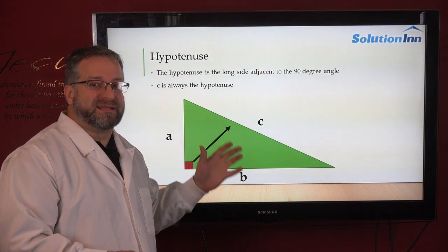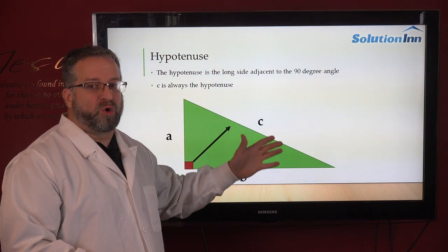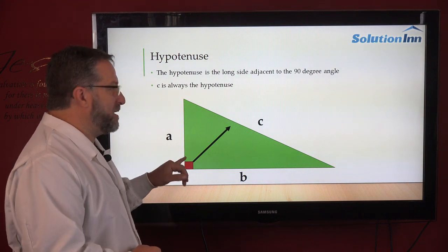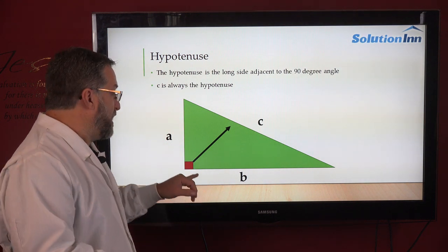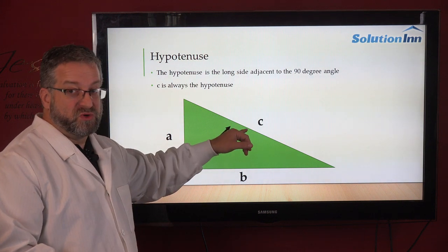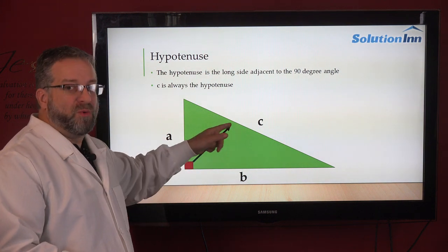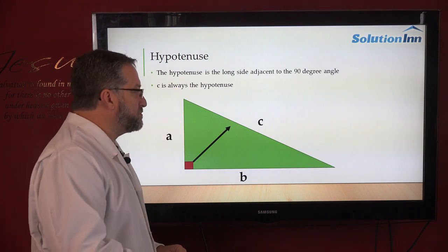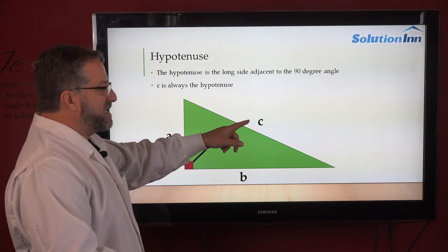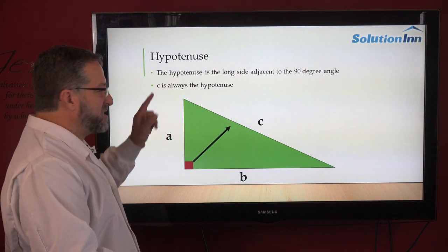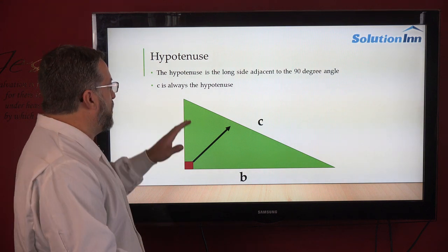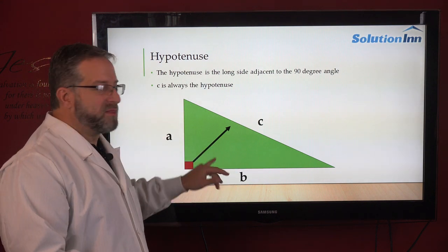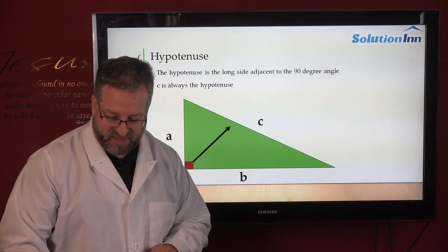In the special case of the Pythagorean Theorem, it's the side opposite the 90 degrees which always ends up being longer than the other two sides. This is c — the c in the equation. The hypotenuse is always c in the Pythagorean Theorem.